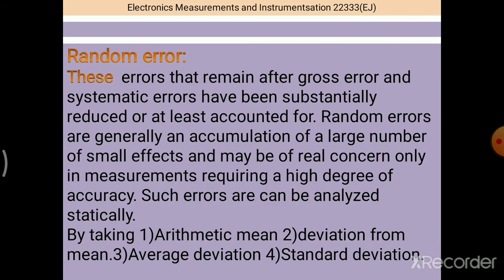Now third error: random error. These errors that remain after gross error and systematic errors have been substantially reduced or at least accounted for. Random errors are generally an accumulation of a large number of small effects and may be of real concern only in measurements requiring high degree of accuracy. Such errors can be analyzed statistically.